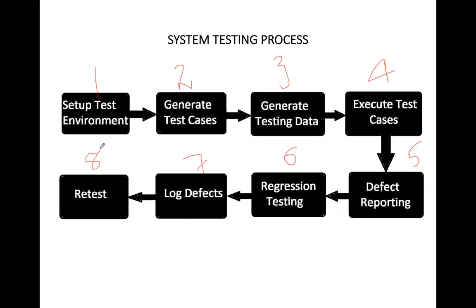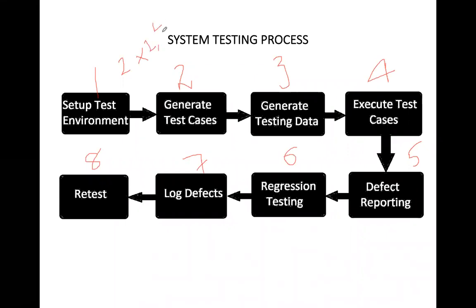We give that input to the system and check whether the system is producing the expected output. If you don't know the expected output in advance, you cannot verify whether the system is working correctly. For example, if you are developing a calculation machine, your first test case might be 2 × 2, and the expected result should be 4. If the result is 4, it's fine. But if the result is 3.8, then we know there is an error in the system.